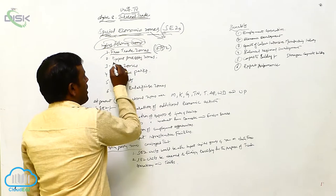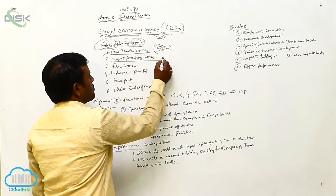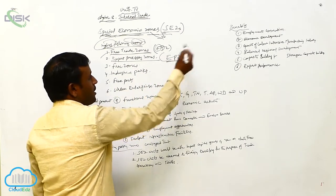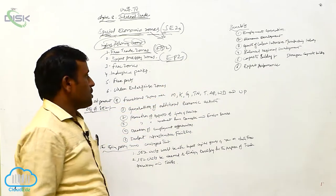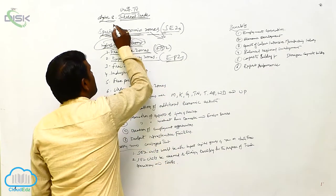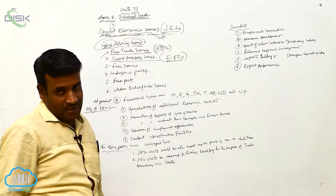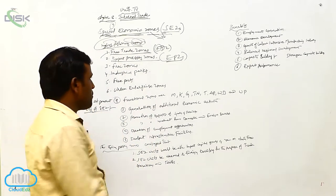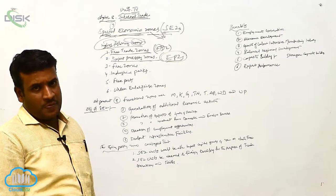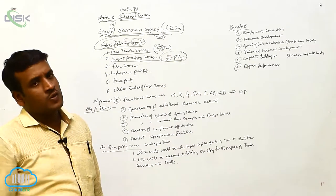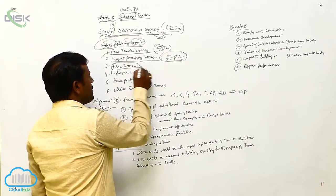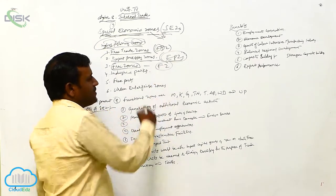They can freely trade — buying and selling — without some restrictions. That implies some zones like Free Trade Zones and Export Processing Zones (EPZ). Export Processing Zones will be explained clearly in chapter 9. Export Processing Zones are established for the purpose of development of exports. Then, Free Zones (FZ).